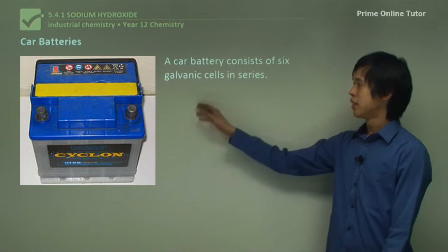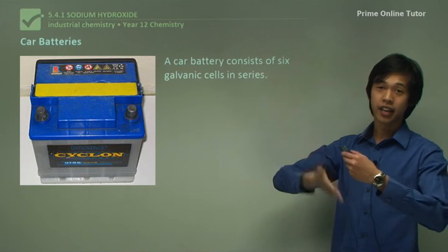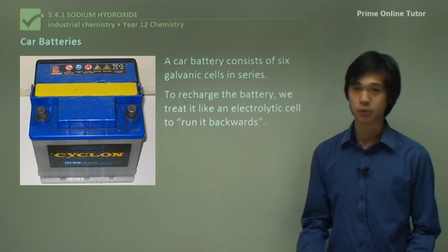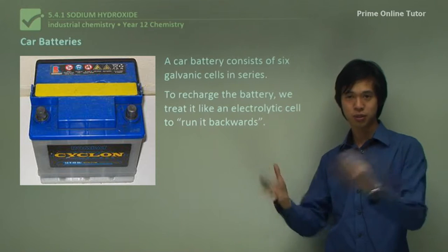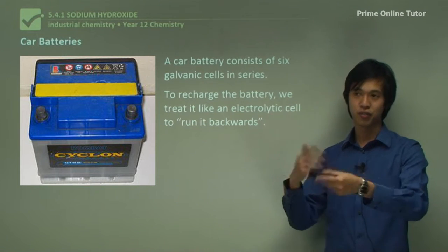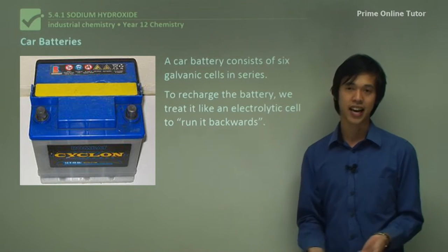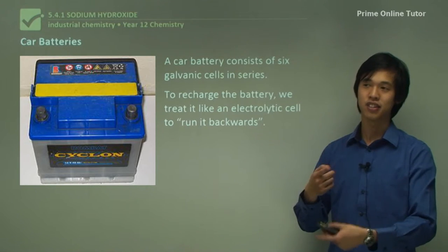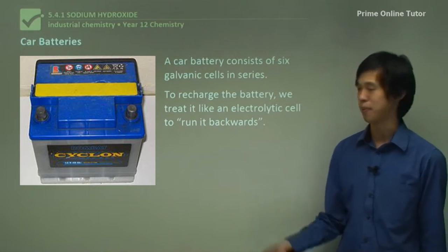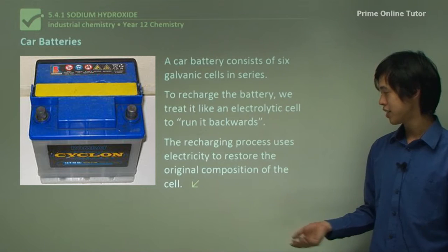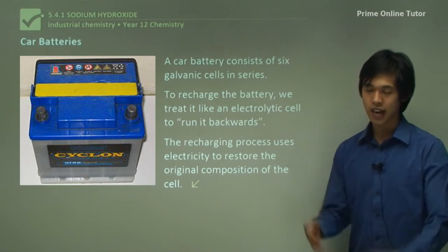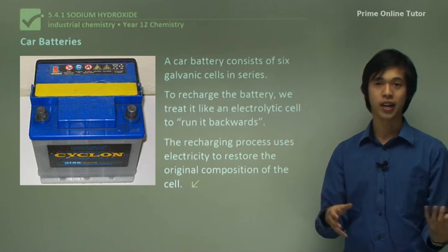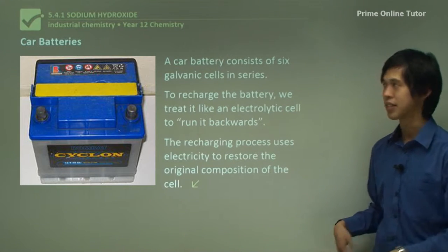A car battery consists of six galvanic cells in series — these are lead oxide cells. To recharge the battery, we treat it like an electrolytic cell and run it in the opposite direction. That's a typical thing in science: we have a phenomenon in one direction, and reversing it makes it act differently — like motors taking in electrical energy to spin, and generators taking in mechanical energy to produce electricity. The recharging process uses electricity to restore the original composition of the cell; as time goes on, the chemicals deplete, then we pump in electrons and it returns to its original form.